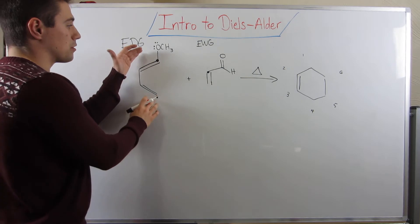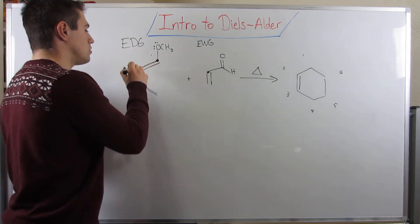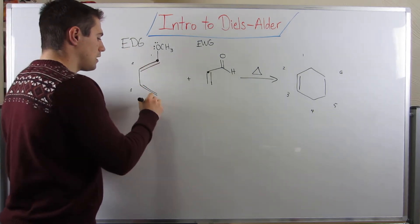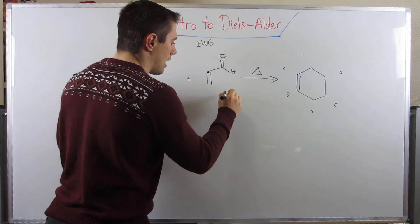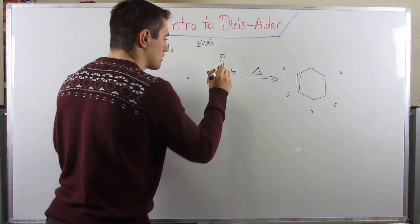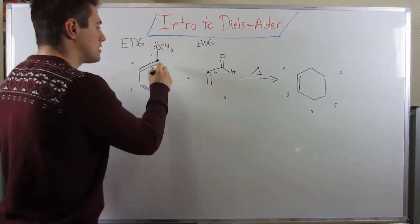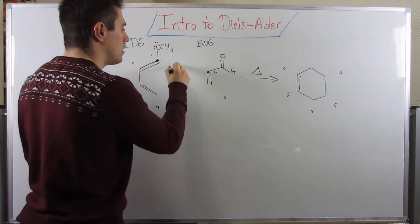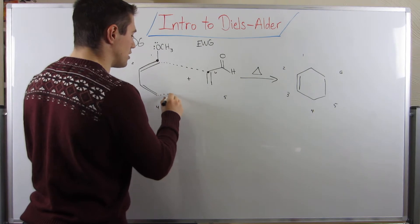I'm going to go ahead and number these carbons on the reactants: one, two, three, four, five, and six. We said we're going to have this type of ring formation.